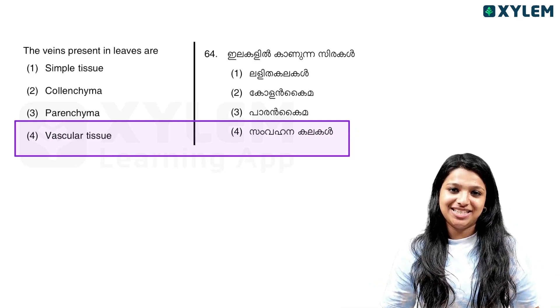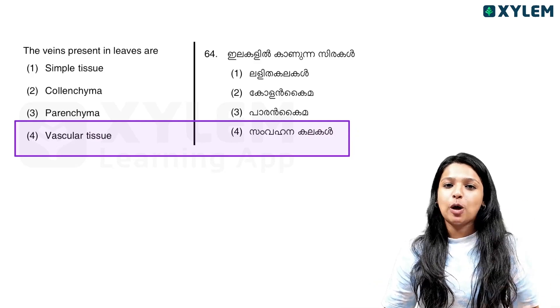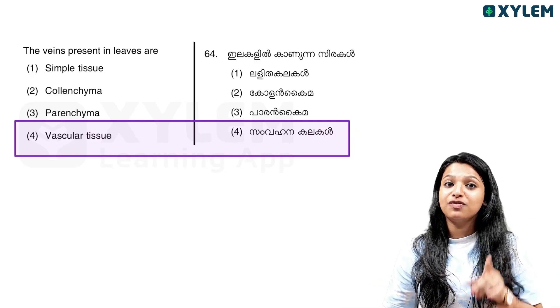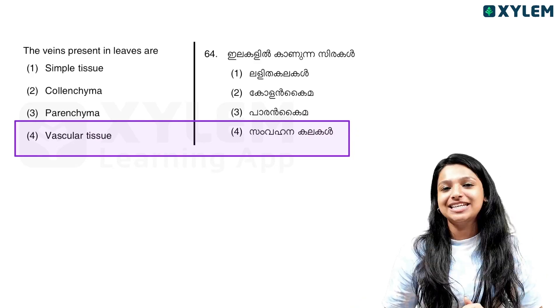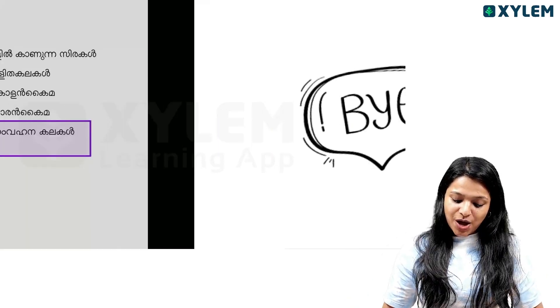Transportation — then the correct option is right. Veins in leaves contain vascular tissues — vascular tissues are found in veins.